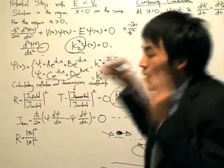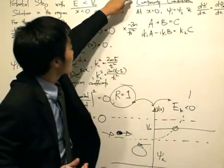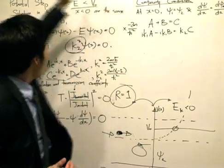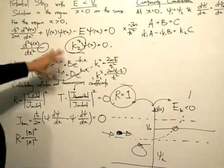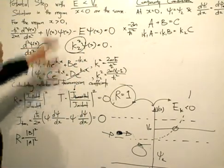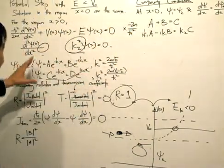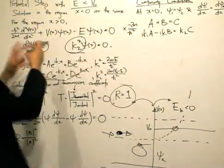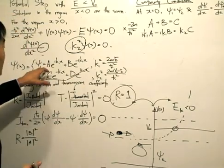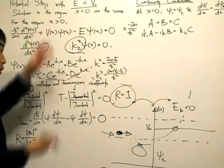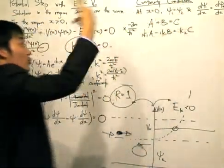We go back to the continuity conditions. When we solve for the wave function, we always get constants a, b, and c. The continuity equations help us express these in terms of one of them. In this case, we let it be a. We can also see that there are two continuity conditions.